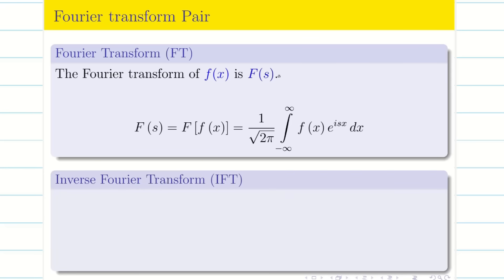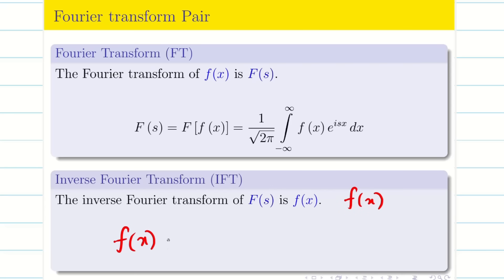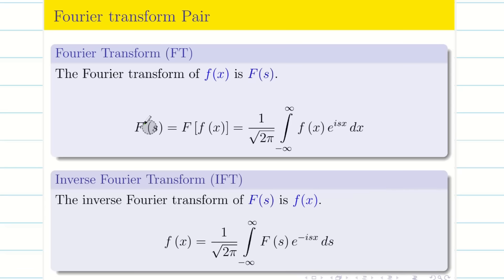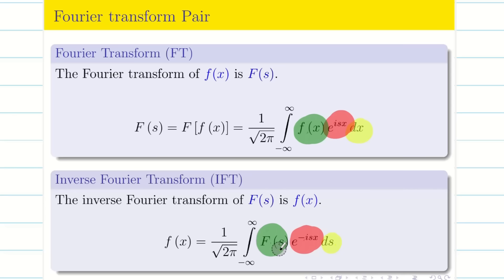The inverse Fourier transform of F(s) is f(x). So f(x) = 1 over square root of 2π, integrated from minus infinity to infinity, of F(s) e^(−isx) ds. To summarize: Fourier transform uses dx, inverse uses ds; Fourier transform has e^(isx), inverse has e^(−isx); Fourier transform operates on f(x), inverse on capital F(s).